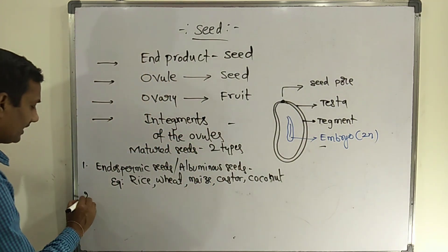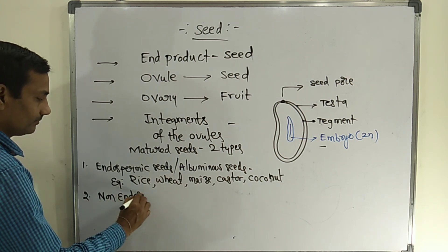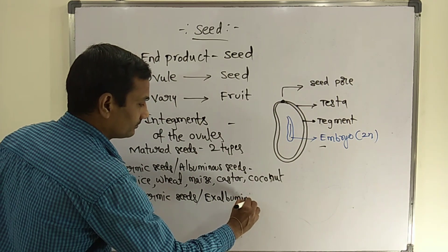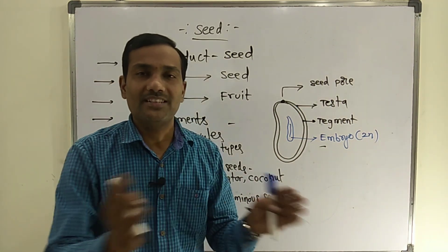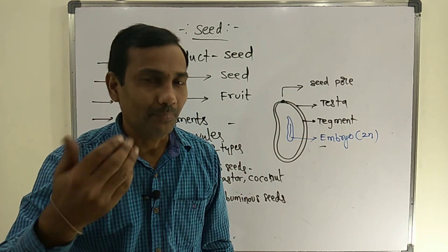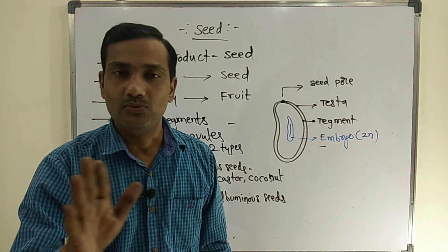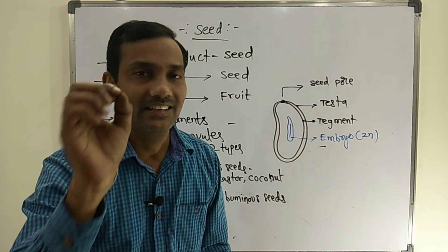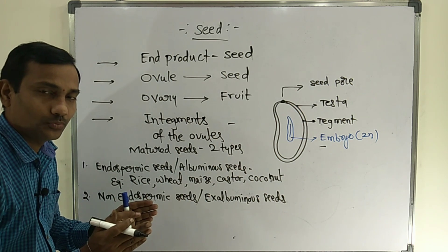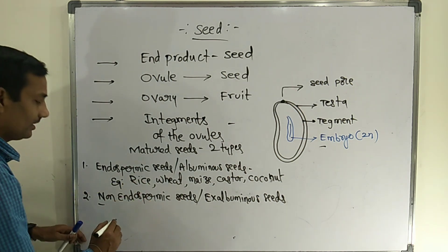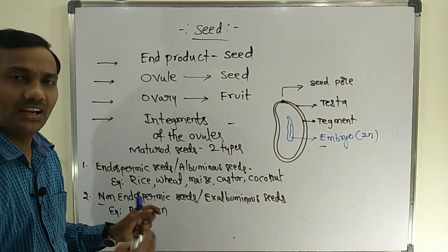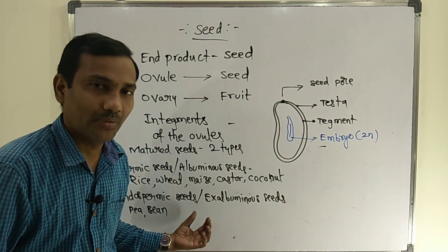The second type of seeds are non-endospermic seeds, otherwise known as exalbuminous seeds. After maturation, these seeds do not consist of endosperm — the endosperm is completely consumed by the developing embryo. At maturity, you cannot find even a single cell of endosperm. Examples of non-endospermic seeds include members of Fabaceae such as pea and bean.